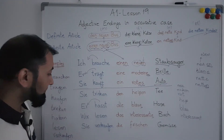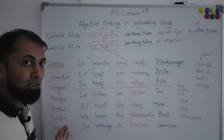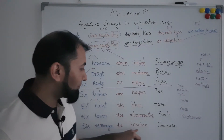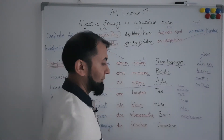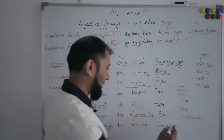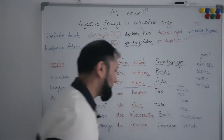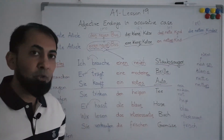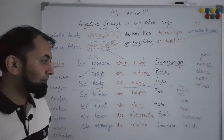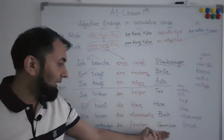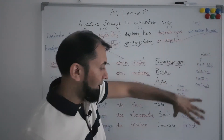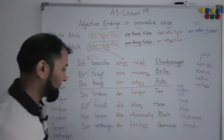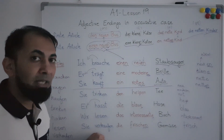The last example is for the plural case: 'Sie verkaufen die frischen Gemüse' — they sell the fresh vegetables. 'Verkaufen' means 'to sell', while 'kaufen' means 'to buy' — they are opposites. 'Gemüse', meaning 'vegetables', is a plural noun, and since we are performing an action on it (selling), it is in the accusative case. Following the plural rule, we add '-en' at the end of the adjective 'frisch', giving 'frischen'.